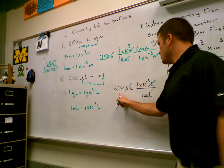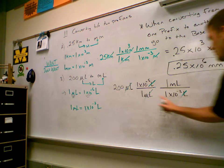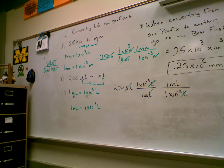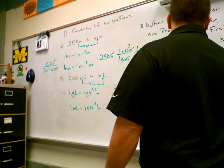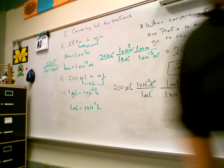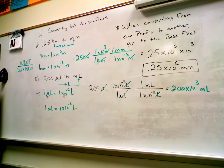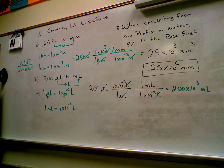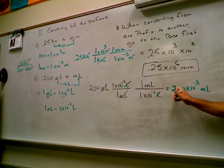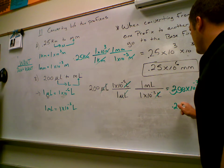So I have 200 times one times ten to the negative six, divided by one times ten to the negative third. The exponent is negative six minus a negative three — not negative nine — which is negative three. So I get 200 times ten to the negative three milliliters. I can rewrite that: negative three means I move the decimal three places to the left, giving 0.2 milliliters.